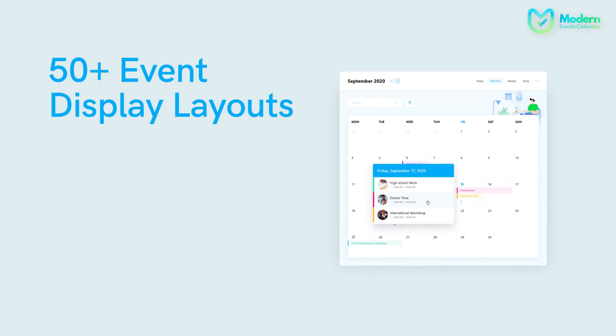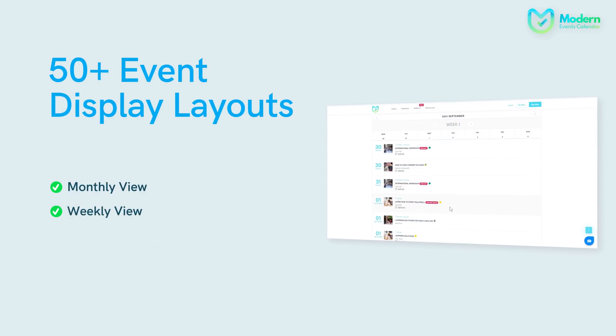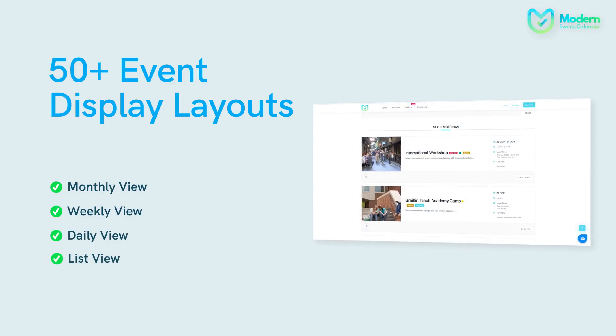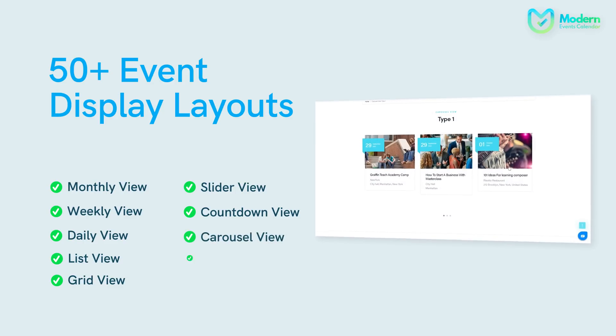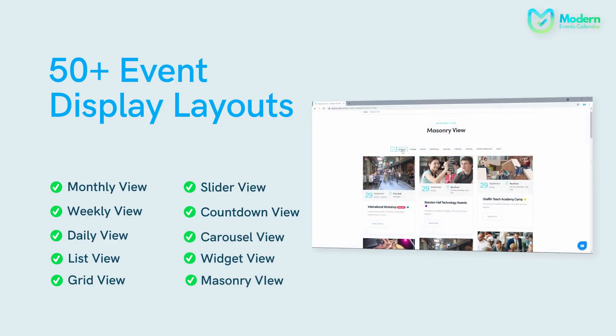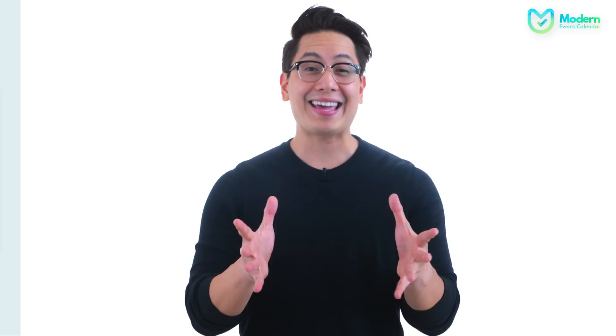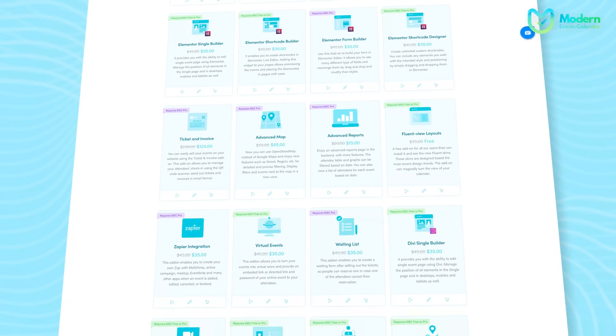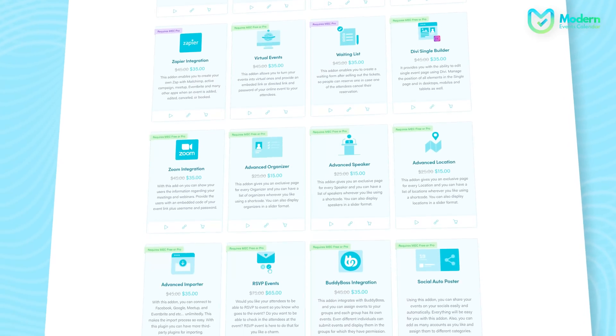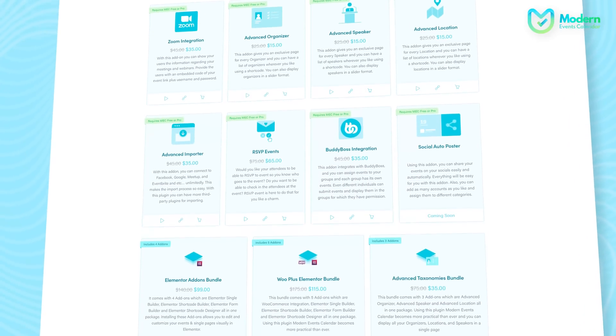Modern Events Calendar elevates the WordPress event experience to a new level of design. It introduces lots of different styles to display your events: monthly view, weekly view, daily view, list view, grid view, slider view, countdown view, carousel view, widget view, masonry view, and event single view — and more in the pro version. There's also the fluent view layout add-on that completely changes the game, turning all your designs on the calendar to match every single trend in the design world. You should really try it.